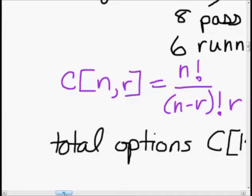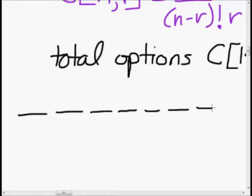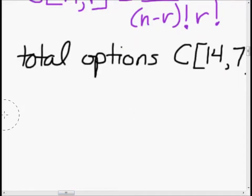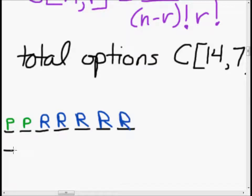Now, what do we need to know? When I'm not sure, I like to start thinking about slots — so I've got 7 slots. What kind of options do I have? Well, I could have two pass plays and the rest be running plays, or I could have three pass plays. But this is going to get kind of out of hand really fast — there are going to be a lot of combinations if we figure it out this way.